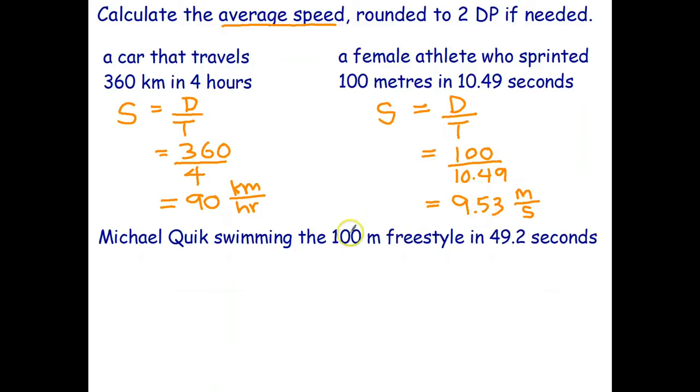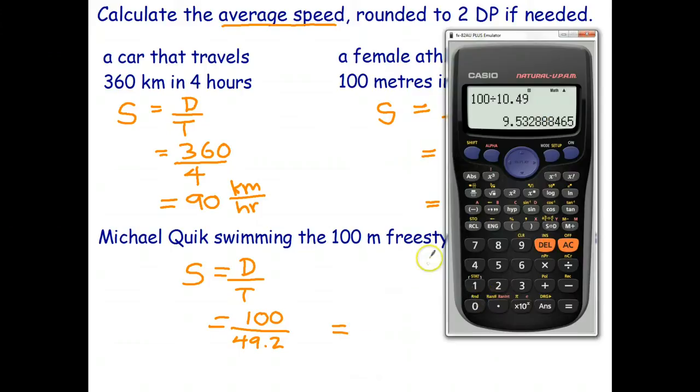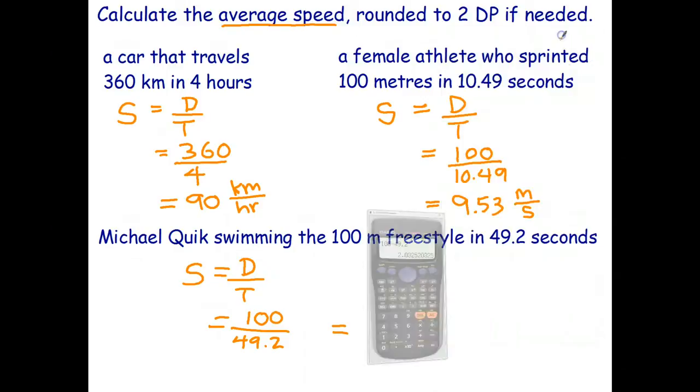Okay, the last one's going to be very similar, just different numbers. Speed equals distance over time. The distance he went was also 100 meters over 49.2 seconds. 100 divided by 49.2, and we get 2.03 meters per second.